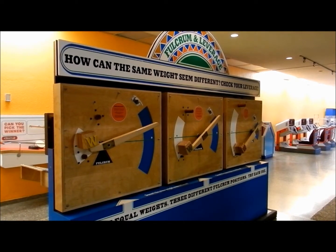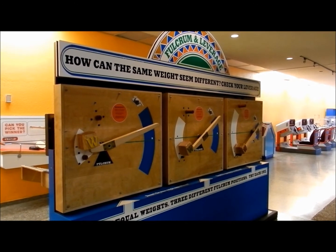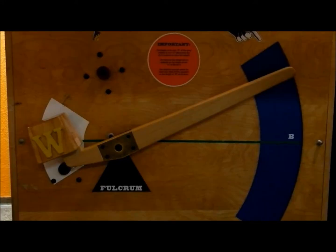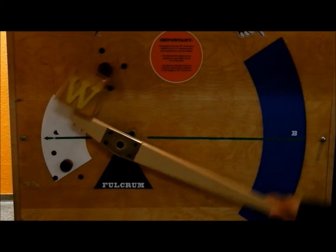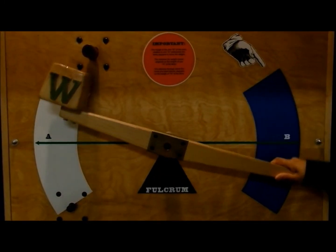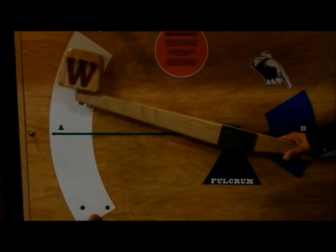This is the Fulcrum and Leverage exhibit at the Ontario Science Centre, where there are weights mounted at various distances from the centre of rotation. As you can see, there is a direct correlation between the length of the radius and the amount of force required to move the weight at a given angle.